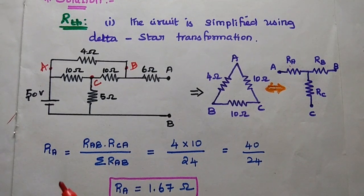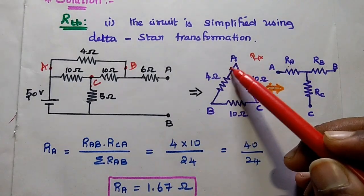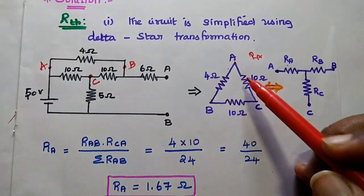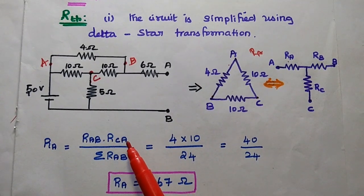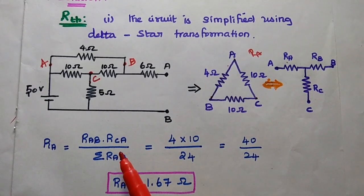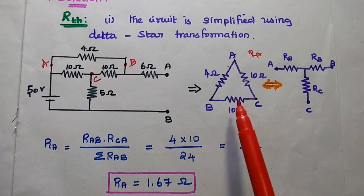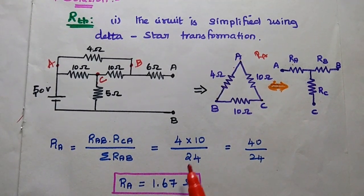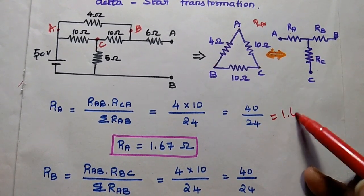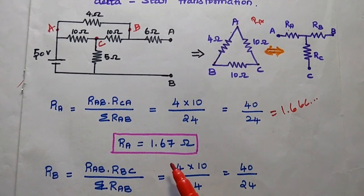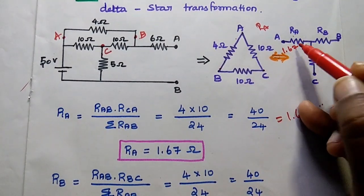Using the delta to star formula: RA equals the product of RAB and RCA divided by the sum of all resistors. So RA = (4 × 10) / 24 = 40/24 = 1.6667, which we simplify as 1.67 ohm.